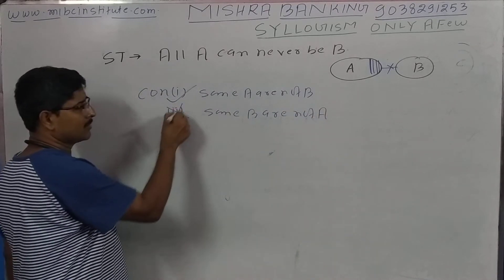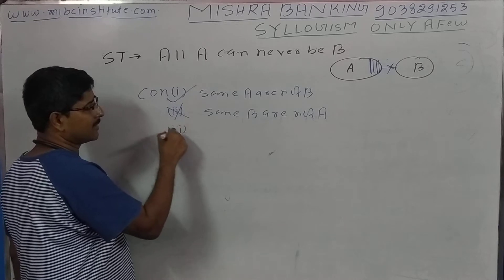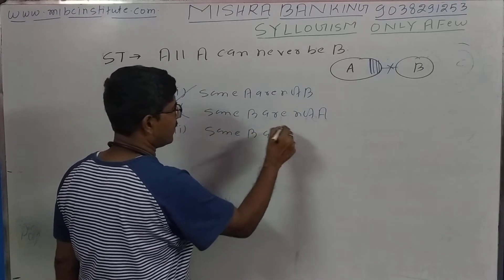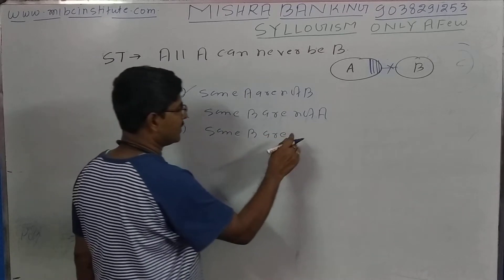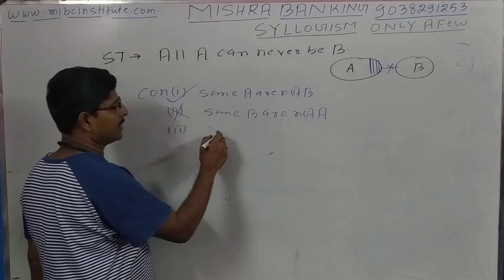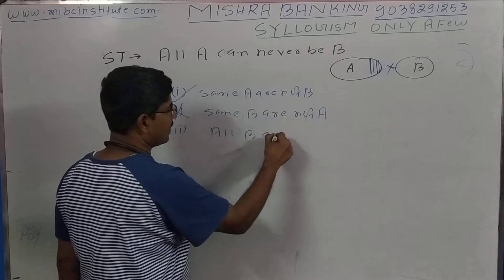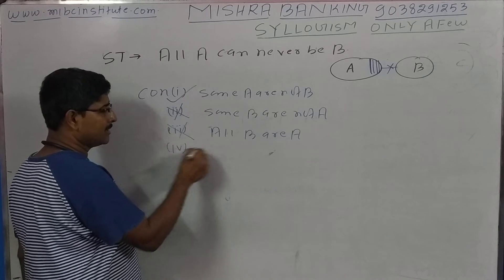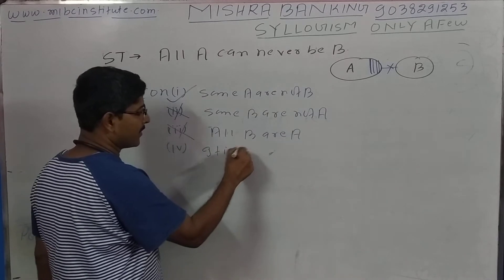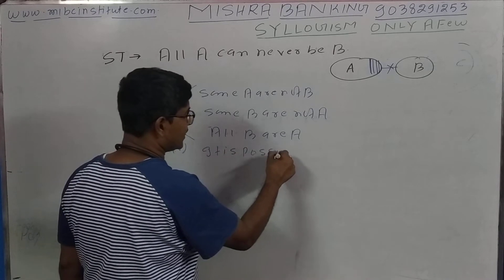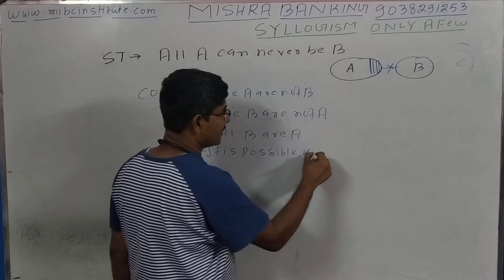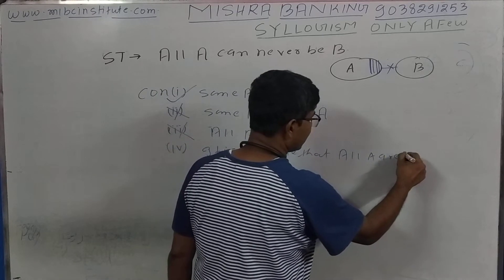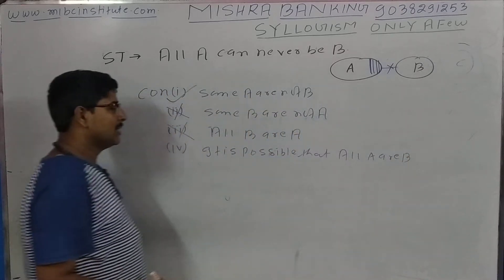Then it is wrong. If someone has a definition of failure as 'some B or not A,' then it is wrong. If someone has that definition of failure, it is possible that all A are B, and then we have a case which can make a decision of failure.